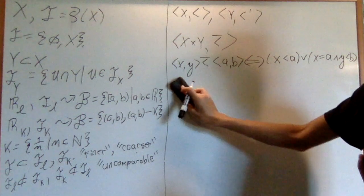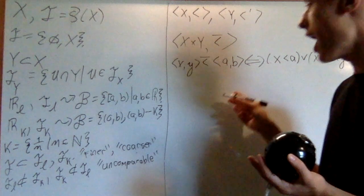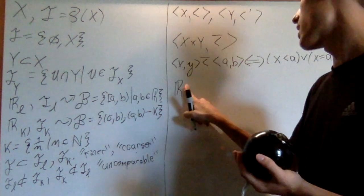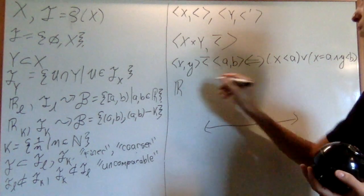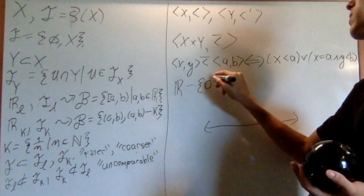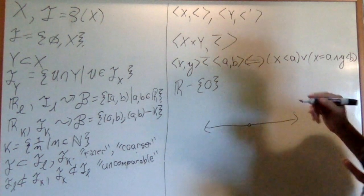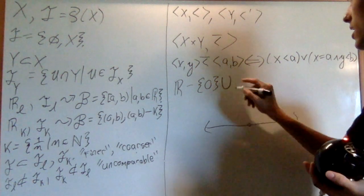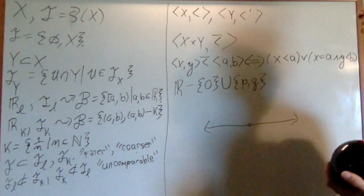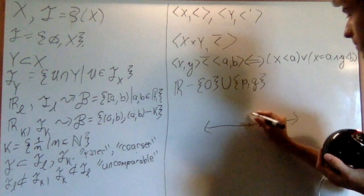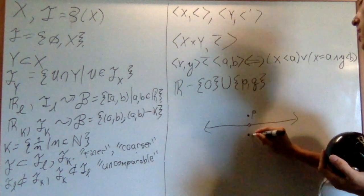Right now, let me introduce another new topology. It's the line with two origins. I take R, so I take my line, and what I do is I remove zero. So I just remove the zero point. And then what I'll do is I'll union in two new points, p and q. That will take the place of zero. So I have p there, and I have q there.